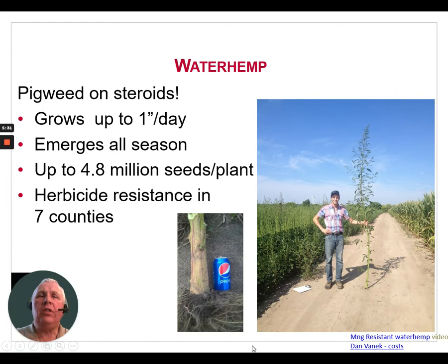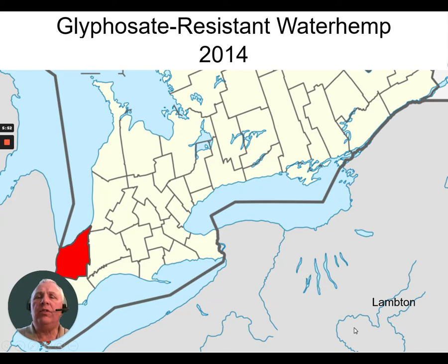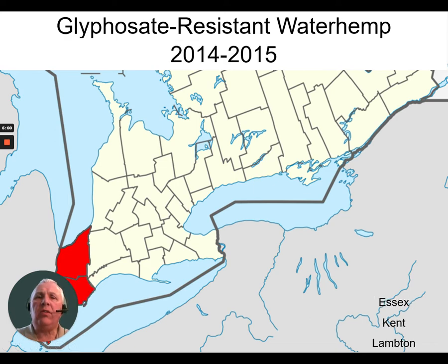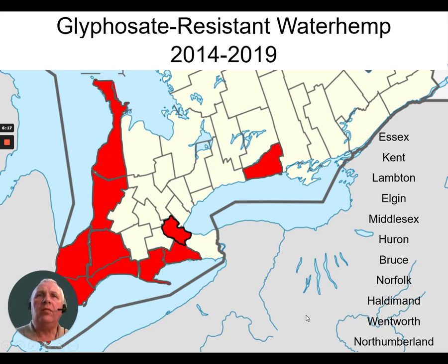One of the new resistant weeds appearing in southern Ontario is waterhemp — it's like a pigweed on steroids. It can grow up to one inch per day, emerges all season long, produces up to 4.8 million seeds per plant, and is now herbicide-resistant in seven counties. It was first discovered in Lambton County and Walpole Island in 2014, then found in Essex and Chatham-Kent the following year, then Middlesex County, then Huron County, Haldimand, and Wentworth. Most recently it's moved into Bruce County and Northumberland — it just continues to spread easterly across the province.